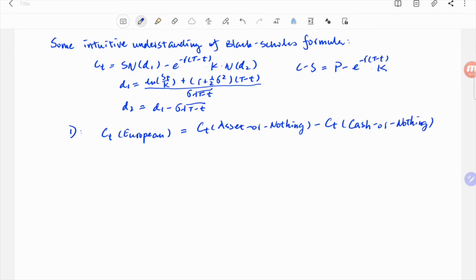Here, since you are paying cash instead of receiving, equivalently long the call option is equivalent to long the asset or nothing option plus short the cash or nothing option.